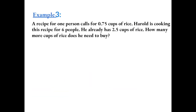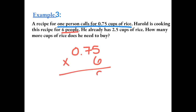Example 3: A recipe for one person calls for 0.75 cups of rice. Harold is cooking this recipe for 6 people. He already has 2.5 cups of rice. How many more cups of rice does he need to buy? We know that for one person you need 0.75 cups of rice, but Harold is making this for 6 people. So first we need to find how many cups of rice he will need for 6 people. We have to take 0.75 and multiply it by 6.